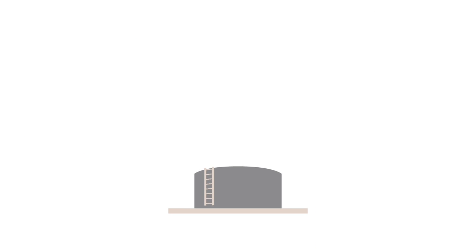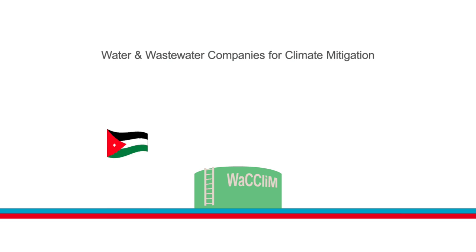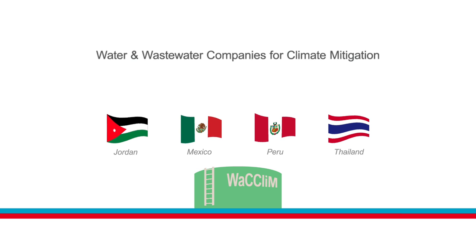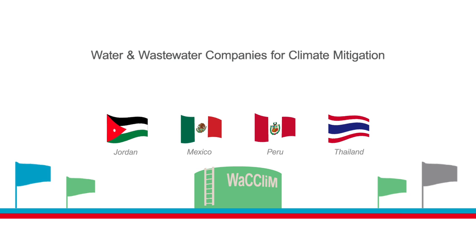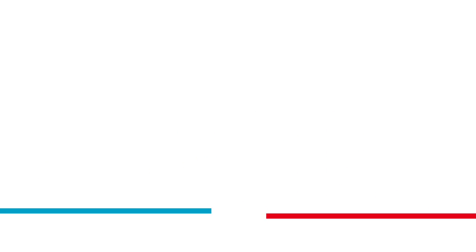But there is an opportunity. WaCCLiM, the Water and Wastewater Companies for Climate Mitigation Initiative, supports utilities on the path towards climate neutrality while engaging governments and the international water and climate community.